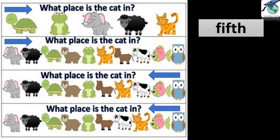What place is the cat in? First, second, third, fourth, fifth — yes, the cat is in the fifth place. We started counting from the left side because the arrow shows from where you have to start counting. Next question: what place is the cat in? The arrow is over here, we will start counting from here. Elephant is the first, so first, second, third, fourth, fifth, sixth — the cat is in the sixth place.